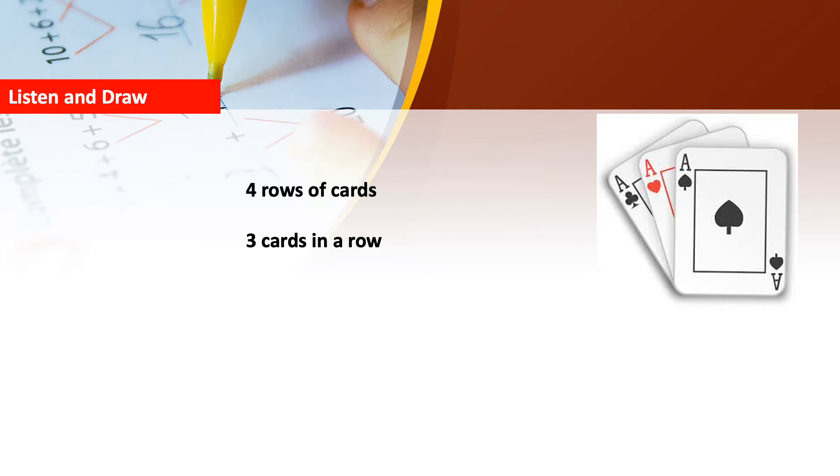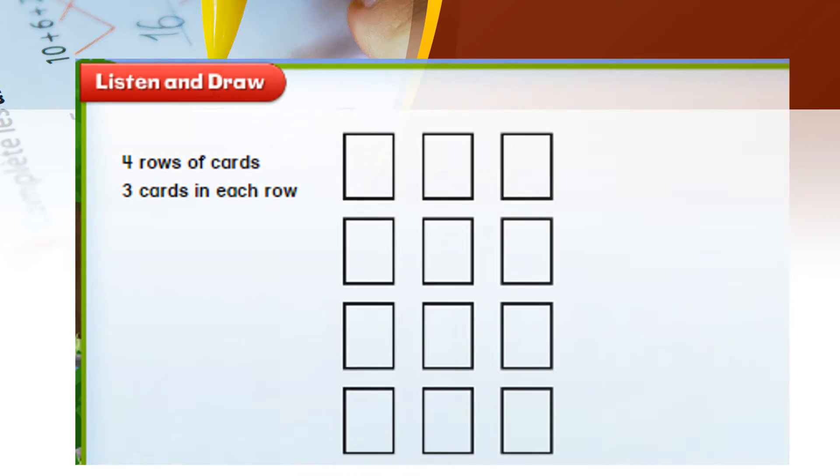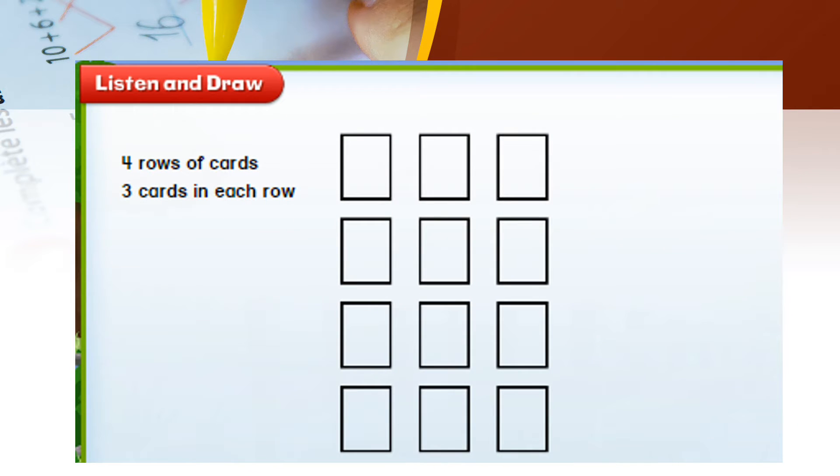Let's look at listen and draw. Clayton has 4 rows of cards. There are 3 cards in each row. What picture can we use to see how many cards Clayton has? Let us use small rectangles to stand for cards. Now the picture shows 4 rows of 3 cards each. Let's count the cards.